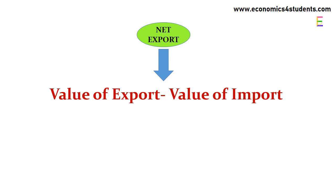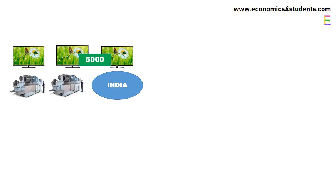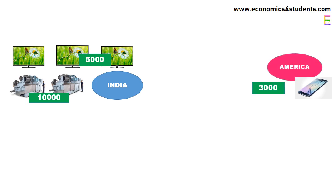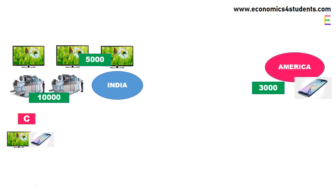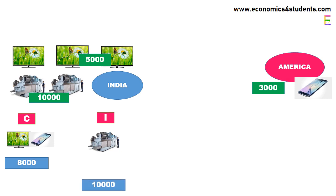We can understand all these four types of expenditure with one simple example. Suppose India has produced three televisions each worth Rs. 5,000 and two machines each worth Rs. 10,000 in one year. In the same year, India has imported one mobile phone worth Rs. 3,000 from America. In India, total consumption is one television produced domestically and one mobile phone imported from America. So the total consumption expenditure is Rs. 5,000 plus Rs. 3,000, which equals Rs. 8,000. If investment is one machine, the total investment expenditure is Rs. 10,000.